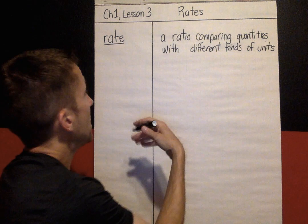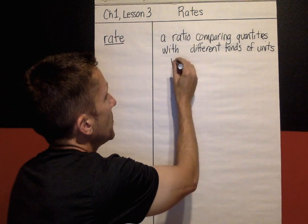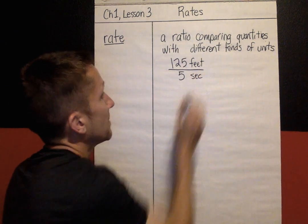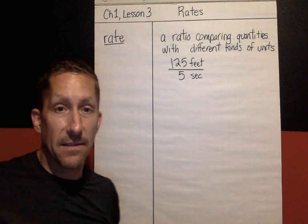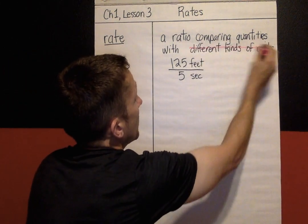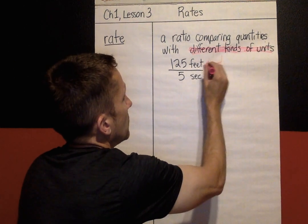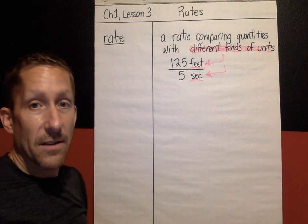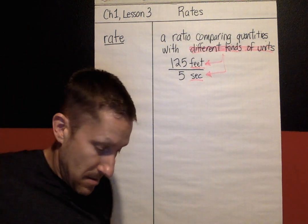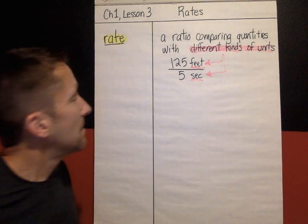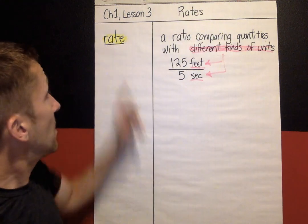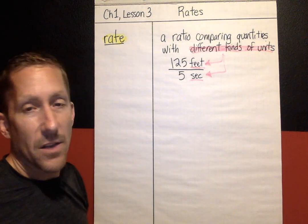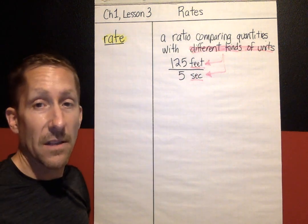Here's an example. Something may travel 125 feet per five seconds. That is a rate. What makes it a rate is that you've got different kinds of units — feet and seconds. So to recap, a rate is just a ratio but with different units. Feet and seconds, money per apples — you can go on and on. As long as you're comparing two different units, that is a rate.